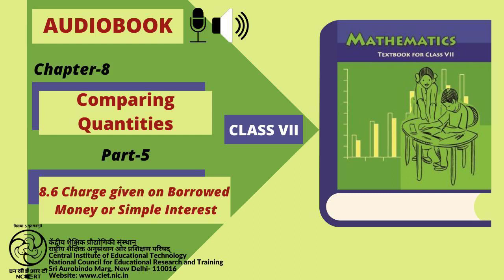C.I.E.T. and N.C.E.R.T. presents Audiobook of Mathematics for Class VII. Chapter VIII: Comparing Quantities, Page 169. Section 8.6: Charge given on borrowed money or simple interest.